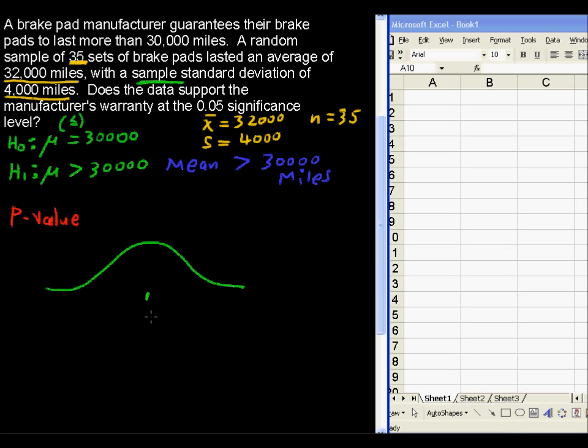So we have this hypothesized mean of 30,000. So we're saying if that's true, if the mean really is 30,000 miles, then we came along and got 32,000 miles, then what is that probability that we would get that value? Or something more extreme, something farther from the mean than 32,000 miles.